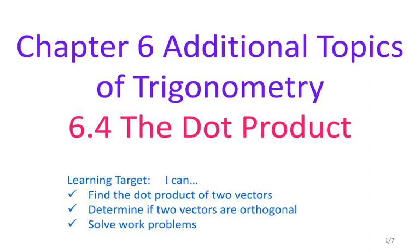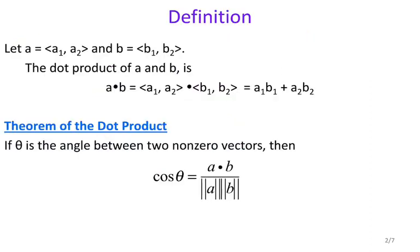So first and foremost, what is the dot product? The dot product is an operation in which you take two vectors and it results in a scalar. So a scalar is a regular number. When I take these two vectors and work through the dot product, the result is going to be a regular number.